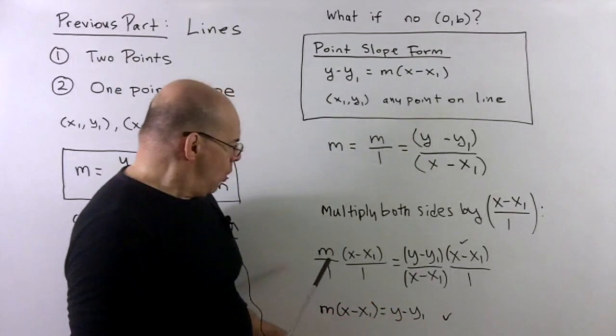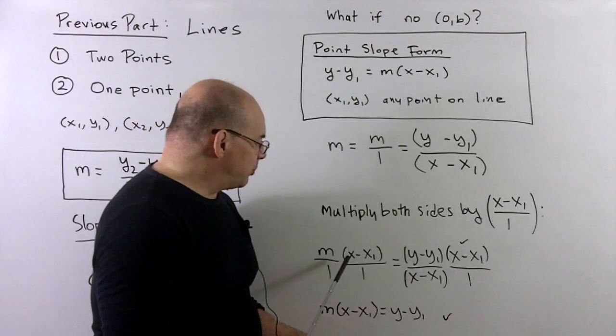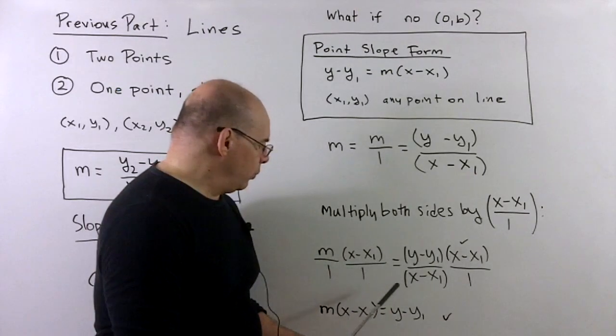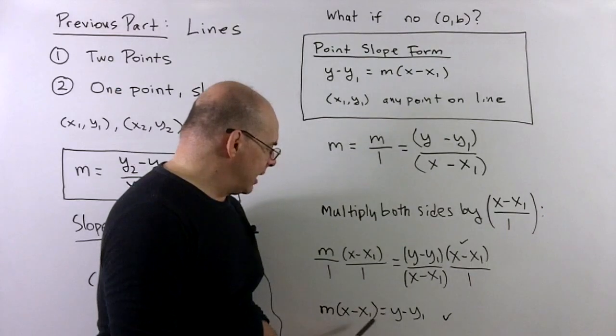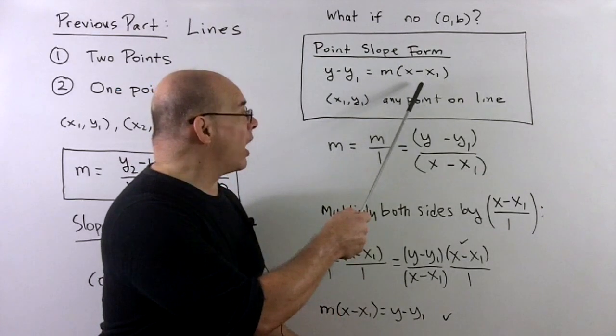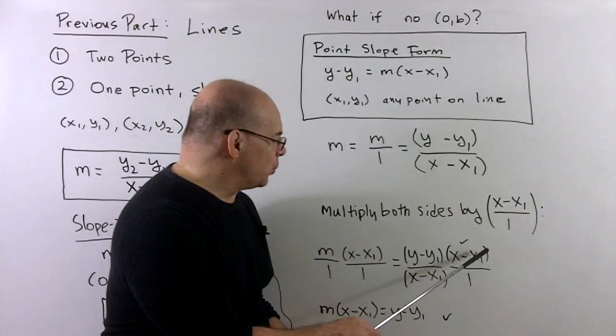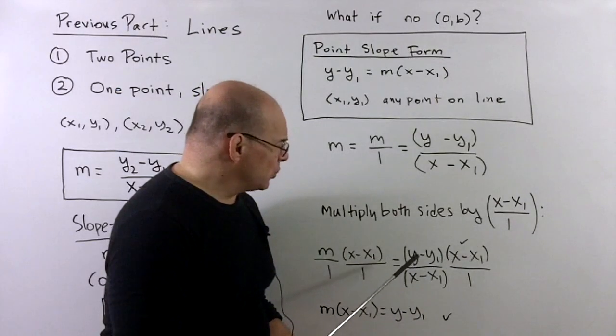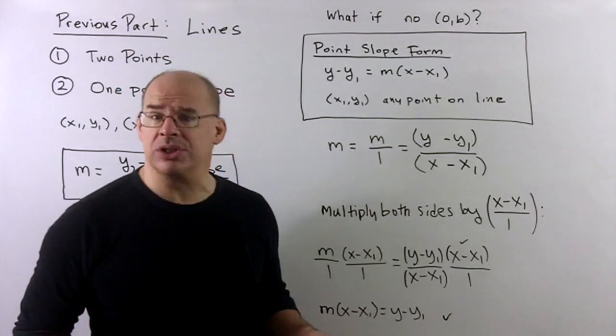So what happens now? Well, on the left-hand side, it's m times parentheses x minus x₁. We can take the 1 away in the bottom. That gives us the m times x minus x₁ in parentheses we have on the right-hand side. And then on the other side, the x minus x₁s are going to cancel, giving us y minus y₁ over 1. And then we have our point-slope formula.